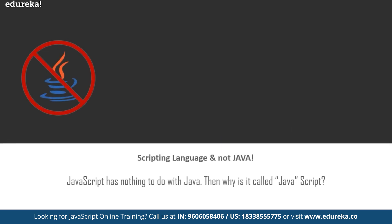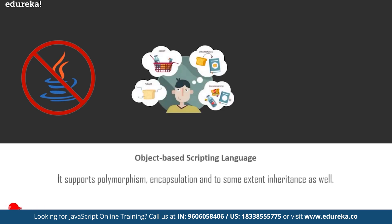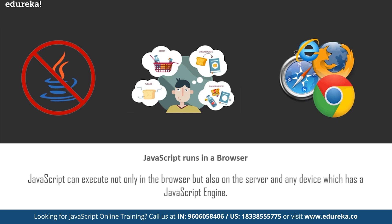JavaScript is a scripting language and not Java — in fact, JavaScript has nothing to do with Java. When JavaScript was first released it was called Mocha, later renamed to LiveScript, and then to JavaScript when Netscape and Sun did a license agreement. It is an object-based scripting language which supports polymorphism, encapsulation, and to some extent inheritance as well. It doesn't have to be compiled like Java and C, which require a compiler. JavaScript runs in a browser — Google Chrome, Internet Explorer, Safari, etc. — and also on the server and any device which has a JavaScript engine.